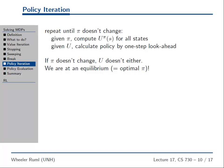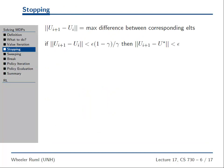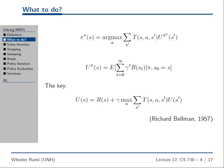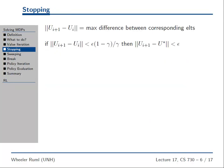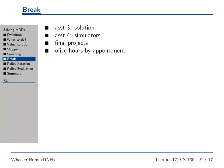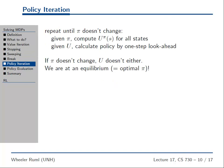The policy iteration algorithm: start with some arbitrary policy pi that might even be bad. Compute the optimal value function for all states assuming you operate according to that policy. Because we know exactly what policy we're following, we don't have the max operator anymore — the equation is now linear, so we can solve it with linear algebra. Then, given the value function, calculate the policy by one-step look-ahead. Repeat until the policy doesn't change.